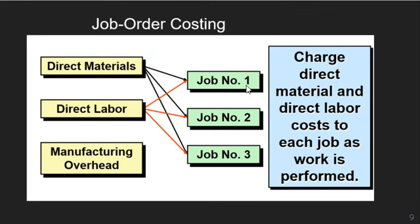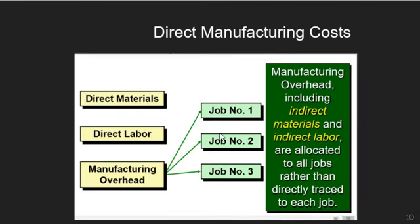In job order costing, we have job order one, two, and three with direct materials, direct labor, and manufacturing overhead. Direct material and direct labor costs are charged to each job as work is performed. Manufacturing overhead — which includes indirect materials and indirect labor — is allocated to all jobs rather than directly traced to each job.